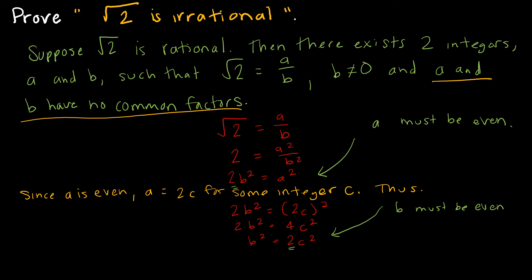So we have found a fact that contradicts one of our original assumptions. Since A and B have a common factor, this contradicts our original assumptions. And we're done.